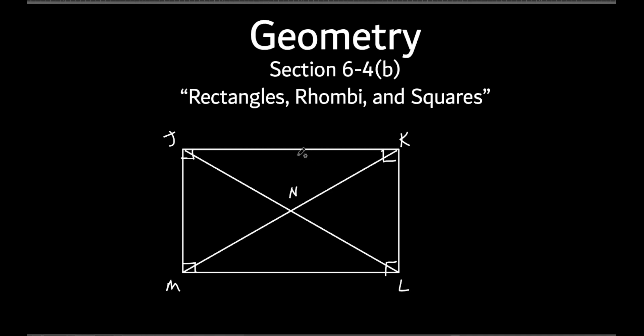But everything else true about a parallelogram is true about this. The opposite sides are equal, right? So JK and ML are equal. JM and KL are equal. They're parallel to each other. The diagonals bisect each other and they're equal to each other.